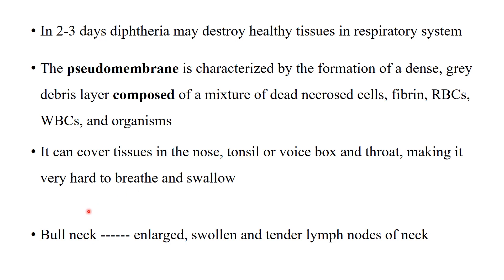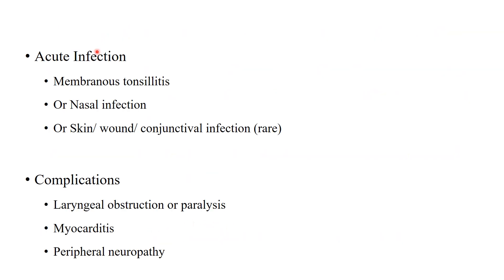Another feature is the bull neck appearance. The cervical lymph nodes, especially the jugulodigastric lymph nodes, become enlarged, swollen, and tender. Diphtheria may appear as an acute infection with membrane over the tonsils coinciding with membranous tonsillitis, or as nasal, skin wound, or conjunctival infection, though these are very rare. If not treated immediately, this potentially fatal disease can lead to complications including laryngeal obstruction or paralysis, effects on the heart, and peripheral neuropathy.